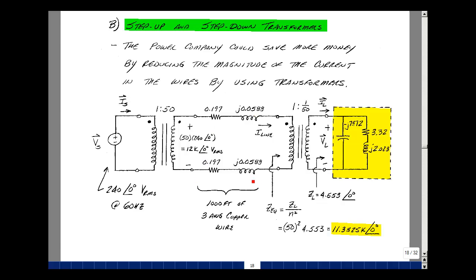Now we'll hook up our transmission lines, and then we'll have to step the voltage back down again because this is way too big. So let's just do the same thing. Let's step it down by a factor of 50. So our turns ratio would be 1 over 50 to 1.